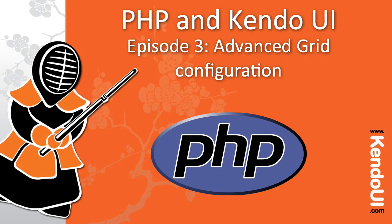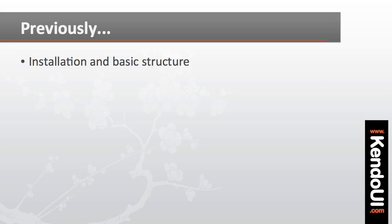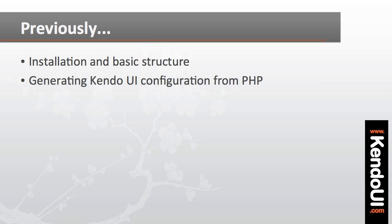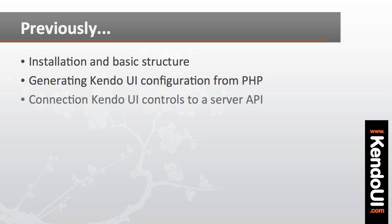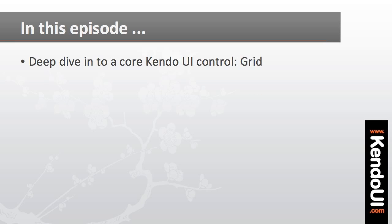Welcome to Episode 3 of the screencast series on getting started with the PHP wrappers for Kendo UI. In the first two episodes, I showed you how to set up the basic structure for working with the PHP wrappers, walked through some of the code to generate the Kendo UI controls, and showed how to connect it all to a server API. In this episode, I'm going to look a little deeper at customizing one of the core Kendo UI components, the grid.